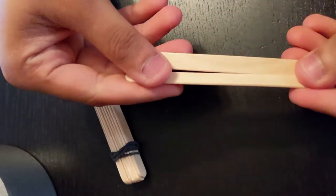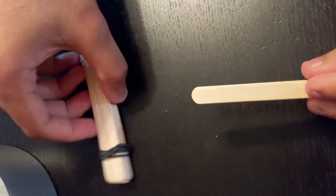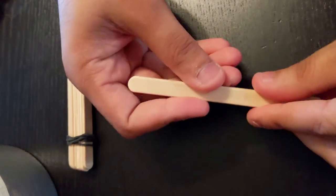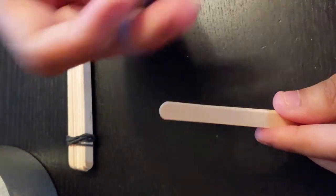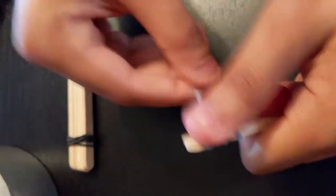For your next step, make a stack of the remaining two popsicle sticks. Use a rubber band to hold them together, but only use one rubber band on one end.